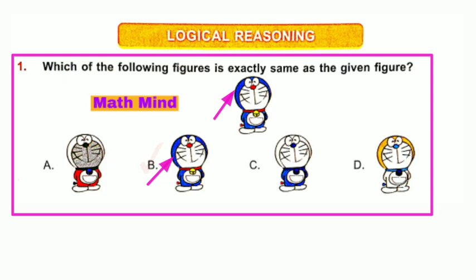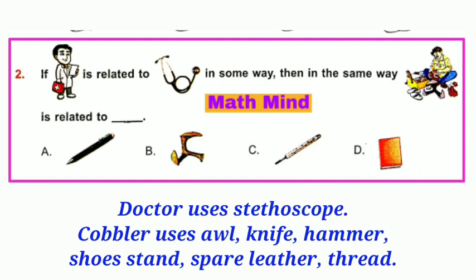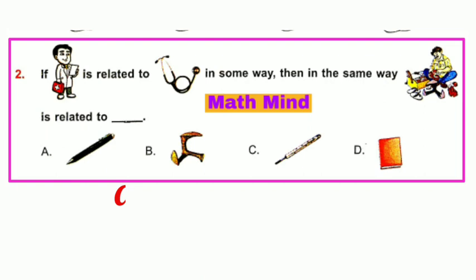Question number 2: If doctor is related to stethoscope in some way, then in the same way, cobbler is related to what? Doctor uses a stethoscope. Instruments that a cobbler uses: awl, knife, hammer, a shoe stand, spare leather, thread, etc. Out of these, this is a shoe stand. So, option B is correct.